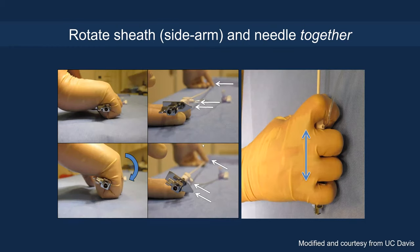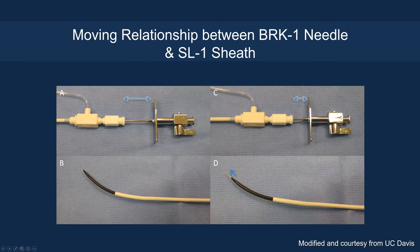When rotating the sheath, side arm, and needle, you must do it together to maintain directionality. All these devices are pre-curved — the pre-curved sheath, pre-curved dilator, and pre-curved needle must all line up. The directionality of the sheath and dilator should match the flush port of the sheath and the arrow of the needle. Move the whole system in tandem, whether overhand or underhand. Maintain only one to two finger-breadths between the components so the needle does not inadvertently exit the catheter before you are ready to puncture.